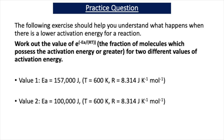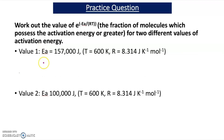Value one represents the uncatalyzed reaction and has an activation energy of 157,000 joules. Value two has an activation energy of 100,000 joules because of the presence of a catalyst. Work out the fraction of molecules which possess the activation energy or greater for both values. Pause the video, have a go at the question, and then we'll go through the answer. The only thing that changes between the two calculations is the activation energy, because of the presence of a catalyst.